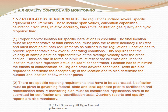The regulations include several specific equipment requirements, including span values, calibration capabilities, calibration error limits, relative accuracy, bias limits, calibration gas quality, and cycle response time. Proper monitor location for specific installations is essential. The final location must be representative of total emissions, must pass the relative accuracy (RA) test, and must meet point and path requirements as outlined in the regulations.